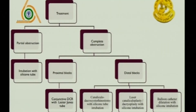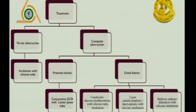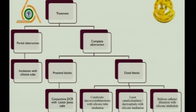Treatment depends on whether there is partial or complete obstruction. Partial obstructions are more amenable to intubation, whereas complete obstructions depend on the site of the block. Proximal blocks require a conjunctivodacryocystorhinostomy (conjunctivo DCR), which has tube-related problems. Distal blocks are treated conventionally with canalicular DCR, with other options being laser canaliculoplasty and balloon lacrimal catheter dilation with intubation.